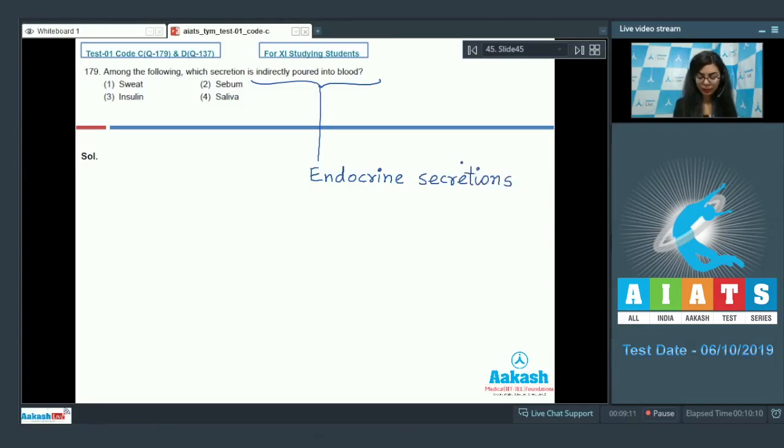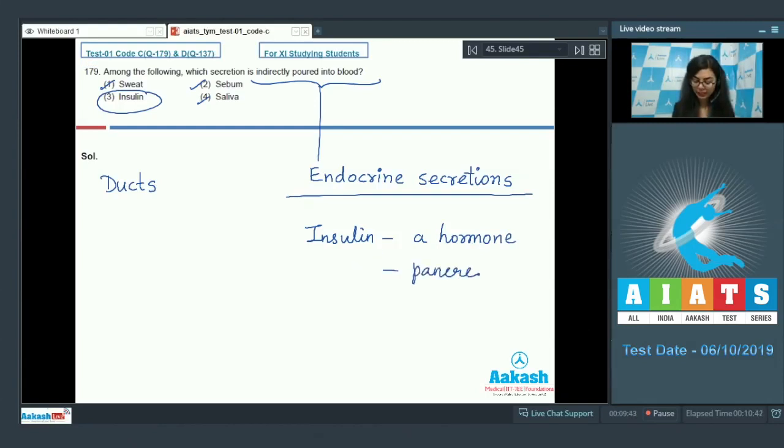Let's look at the options: sweat, sebum, insulin, saliva. Sweat, sebum, and saliva are exocrine secretions, so for them there are specialized ducts present for secreting them. Whereas insulin - insulin is a hormone. It's released from the endocrine portion of the pancreas and it's indirectly poured into the blood, which makes it our right answer.